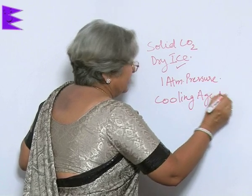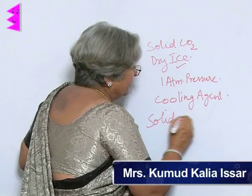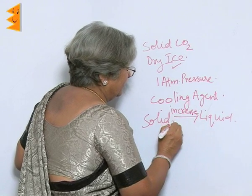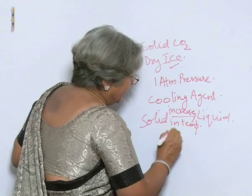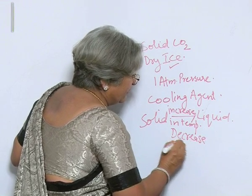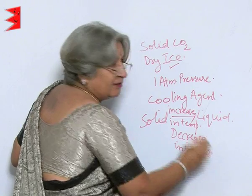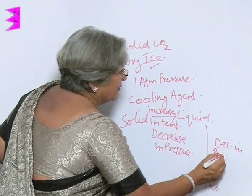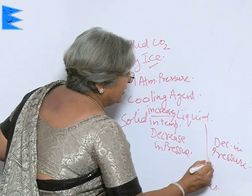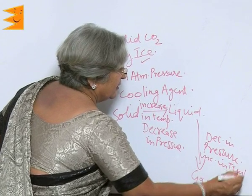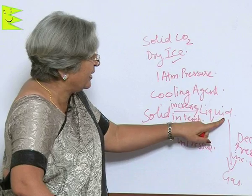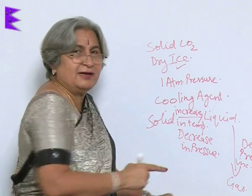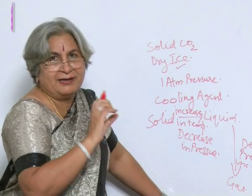The change of matter from solid to liquid involves an increase in temperature and decrease in pressure. Further, liquid to gas involves a further decrease in pressure and increase in temperature. In the reverse case, gas to liquid involves an increase in pressure and decrease in temperature, and from liquid to solid again involves an increase in pressure and decrease in temperature.